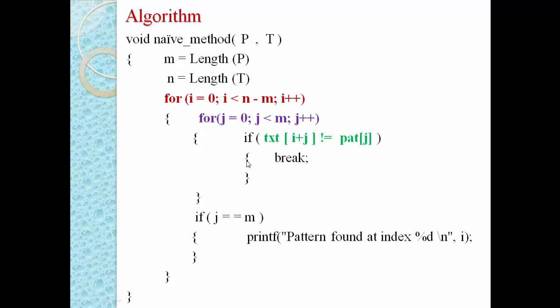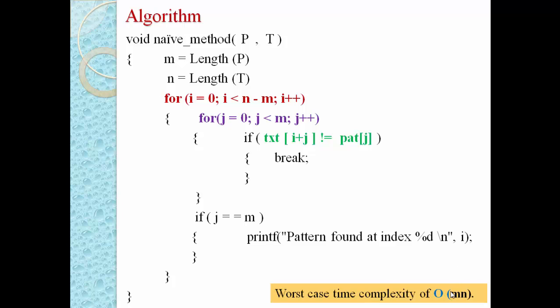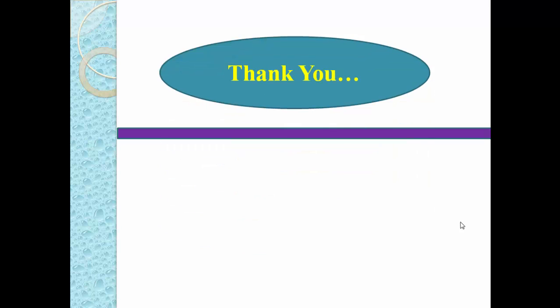Considering the time complexity of this algorithm, in the worst case both loops execute fully: the outer loop runs n minus m times and the inner loop runs m times, giving a total of m times n executions. Therefore, the time complexity in the worst case is O(m × n). This concludes how we can find all occurrences of a pattern inside a large text using the naive string matching algorithm. Thank you for watching this video.